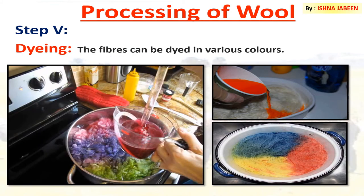The fifth step in processing of wool is dyeing. The fibers can be dyed into various colors. As the natural fleece of sheep and goat is black, brown, or white, these fibers are dyed into various bright colors, as you can see.